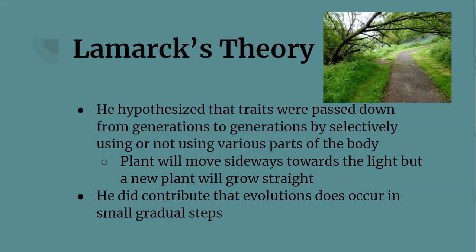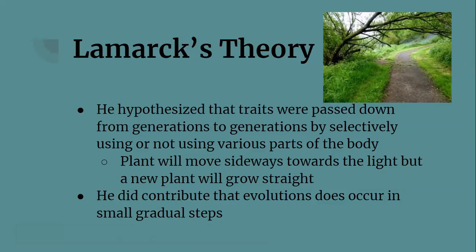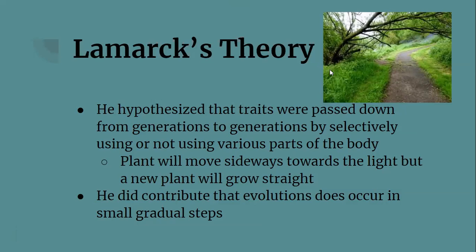Unfortunately, Lamarck's theory of transformation doesn't hold up when investigated further. His theory doesn't explain how features such as eyes could have developed, and it doesn't work when tested with experiments. For example, if you force a plant to grow sideways, the offspring of that plant still grows straight up toward the light. While his theory was not correct, Lamarck did contribute important new ideas: he suggested that evolution takes place by small, gradual steps, and he proposed that simple organisms could develop over many generations into more complex organisms.